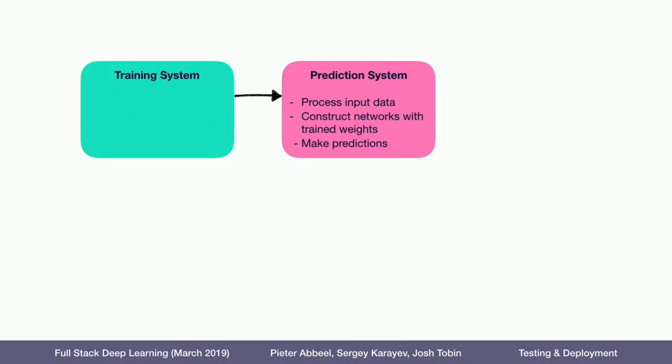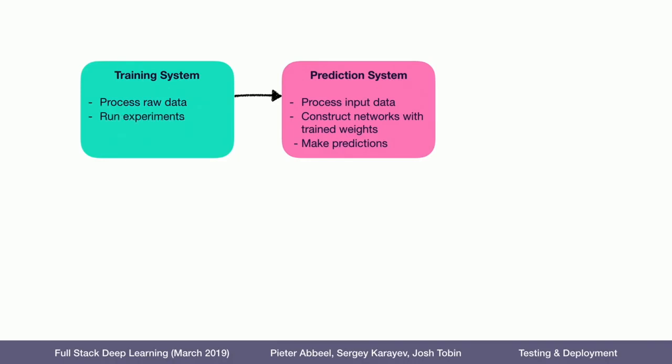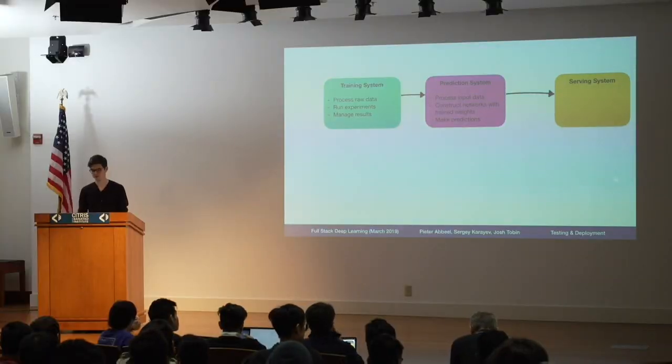To generate the prediction system, there is potentially a separate codebase called the training system. It could live in the same repository, but conceptually they're different codebases with different requirements. The training system processes raw data, runs experiments, and manages the results — for example, picking the best model out of a number of experiments. The prediction system then has to be deployed for end user access, which we call the serving system.